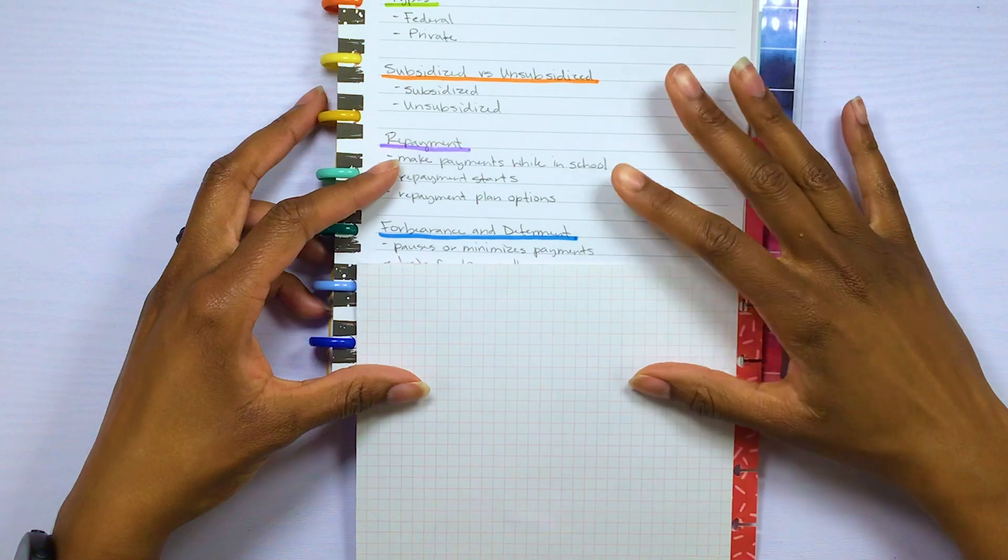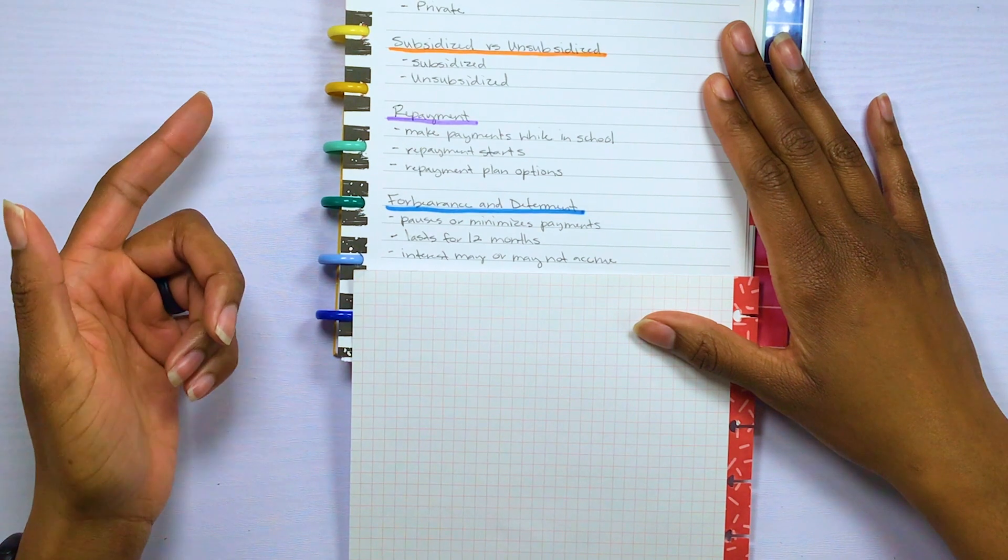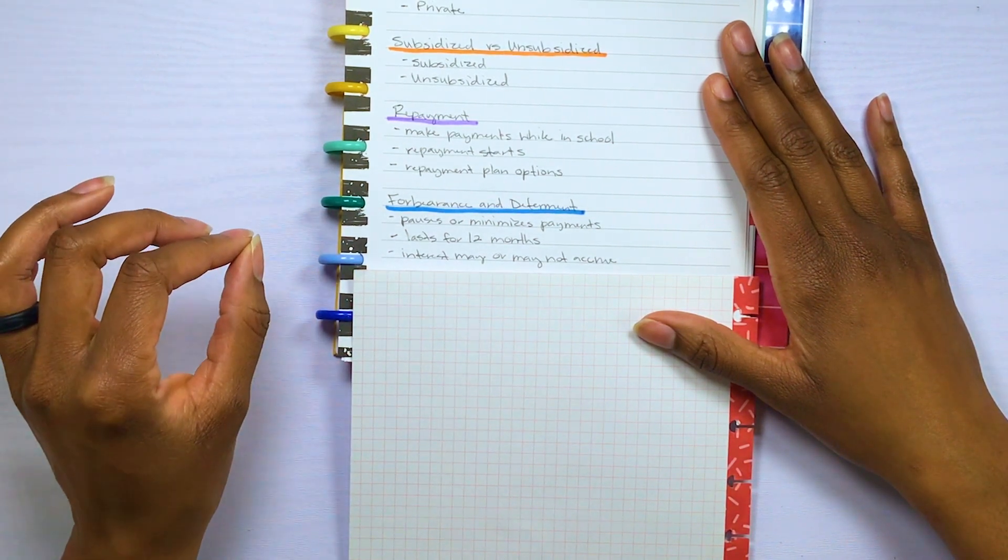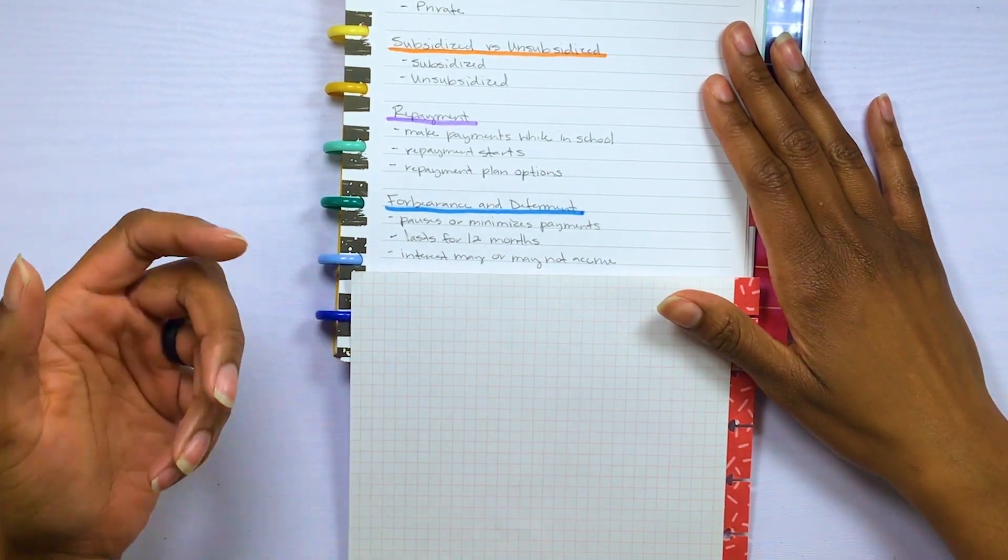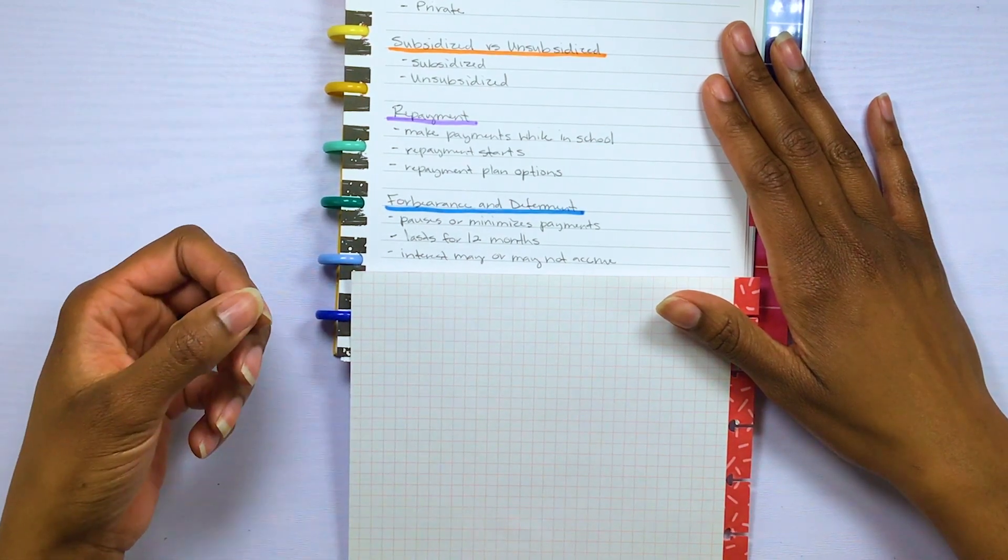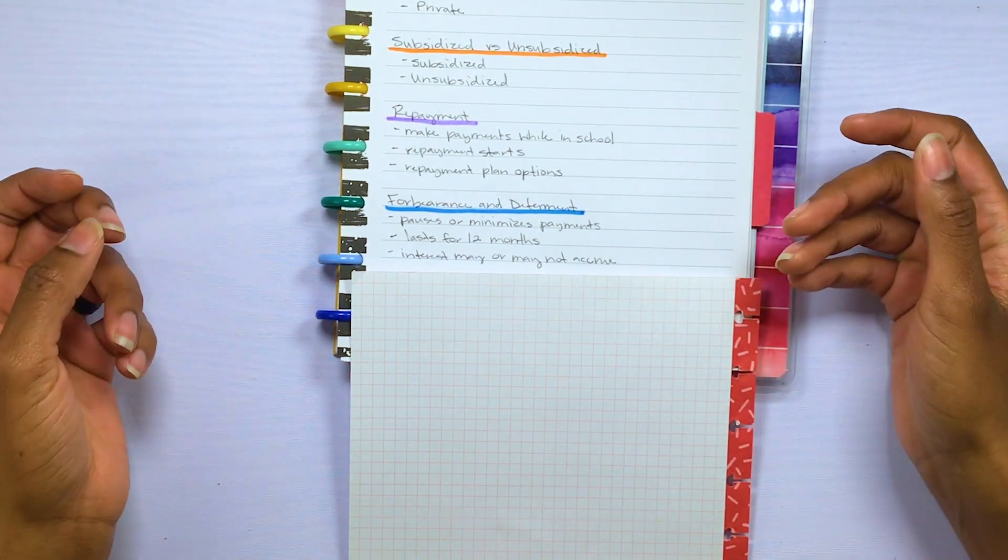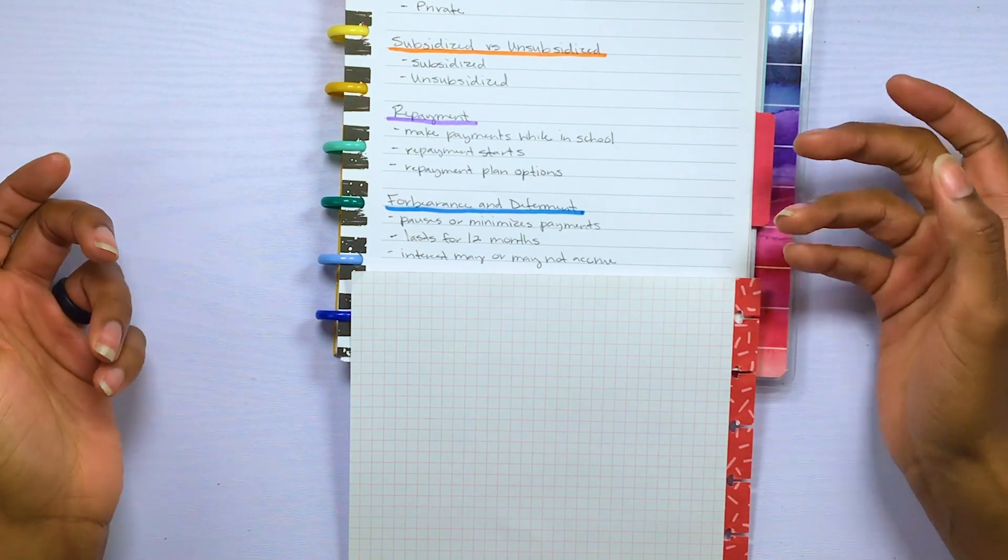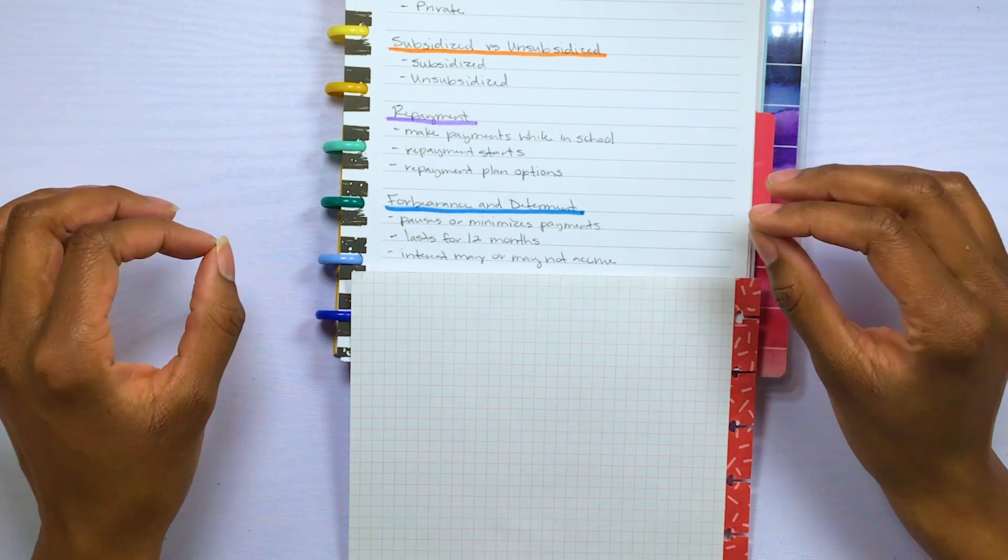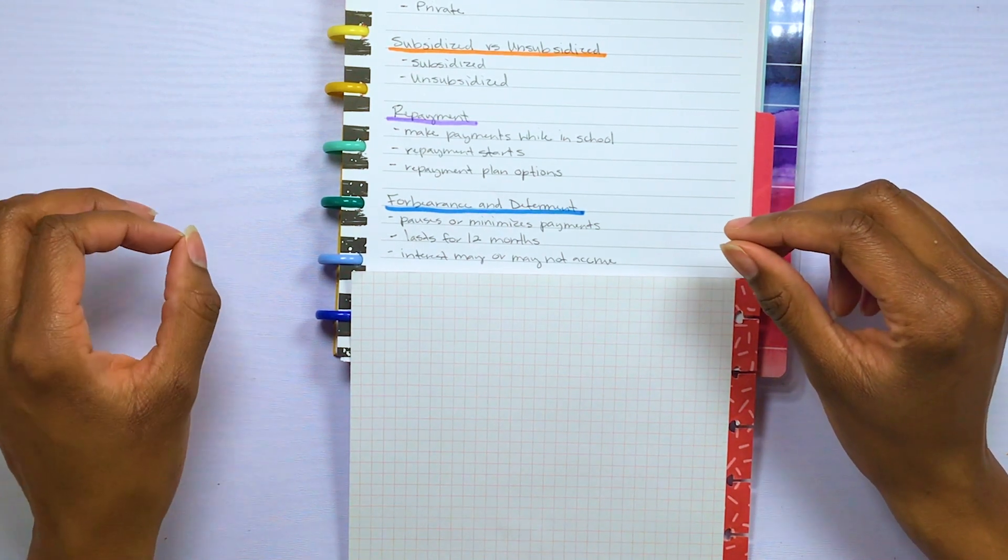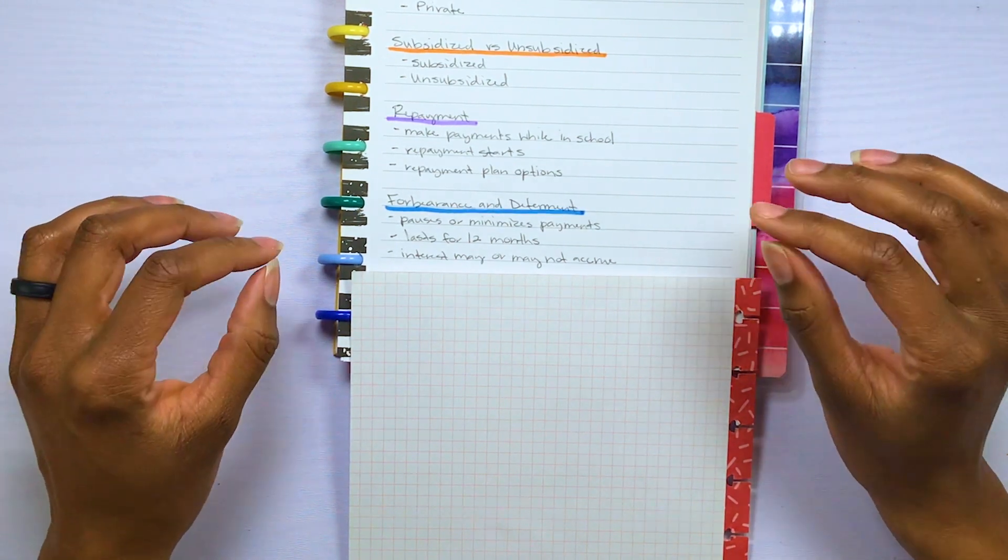So now let's go a little bit deeper into forbearance and deferment. So basically these are very similar in the sense that they both can stop or minimize your payments for reasons such as unemployment, economic hardship, etc. Typically, these forbearance or deferment will last about 12 months and can be renewed up to three years. But the most important thing about these forbearance and deferment periods is that interest may or may not accrue during this period. So if interest does accrue, it will be capitalized when the forbearance or deferment period ends.